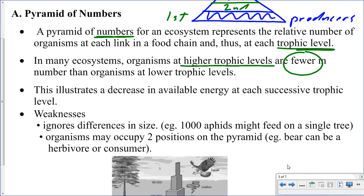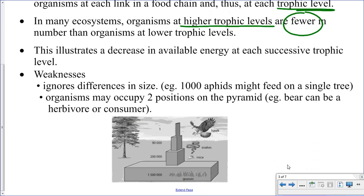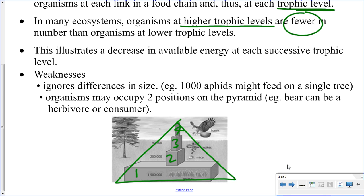There are some problems with the pyramid of numbers. Here we have another pyramid with some actual species for the different trophic levels — four different trophic levels. Starting with the base, the example uses grasses: 1.5 million individual grass plants. As we go up to the primary consumers, the mice, we see there are much fewer: 200,000. The third trophic level, the secondary consumers — snakes — 90,000. And that will support in this particular ecosystem one single hawk. This kind of gives an explanation as to why we only have four trophic levels. If you only have one hawk, that's simply not going to be able to support a higher trophic level.